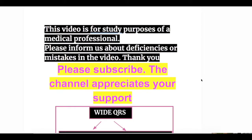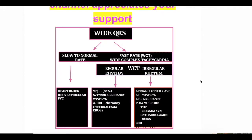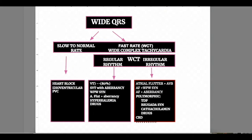In this video we will discuss wide QRS, their features and EKG findings. Wide QRS may have a slow to normal rate, or it may be wide complex tachycardia (WCT). The wide complex tachycardia may be with regular rhythm or with irregular rhythm. In the slow to normal rate wide complex QRS, we have heart block, idioventricular rhythm, and premature ventricular contraction.